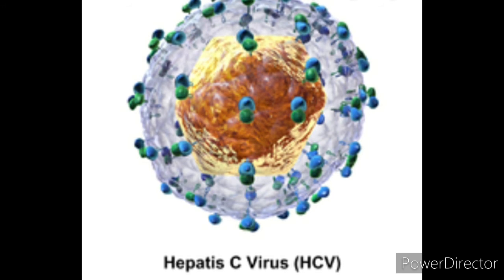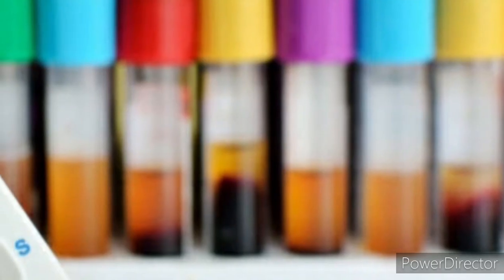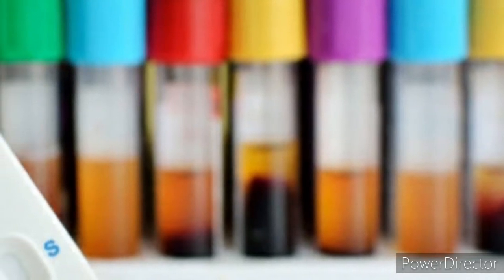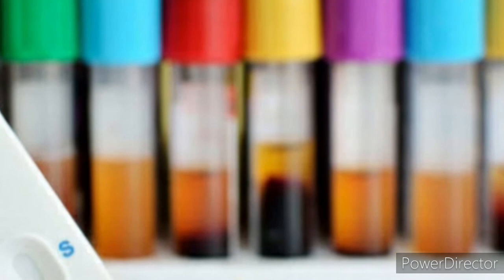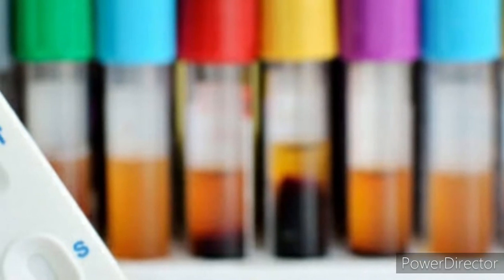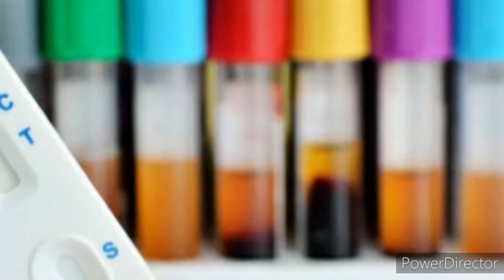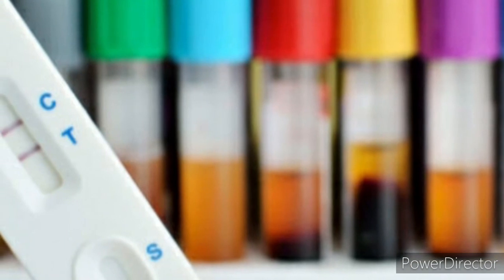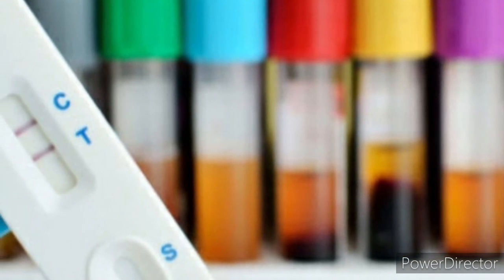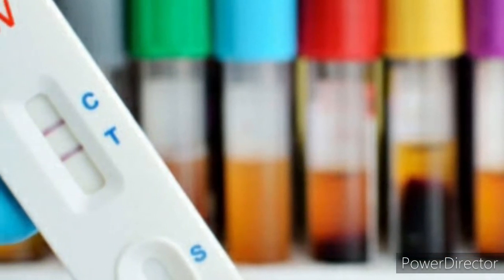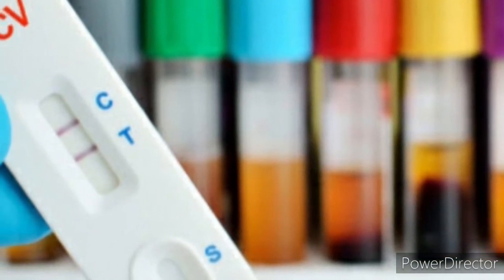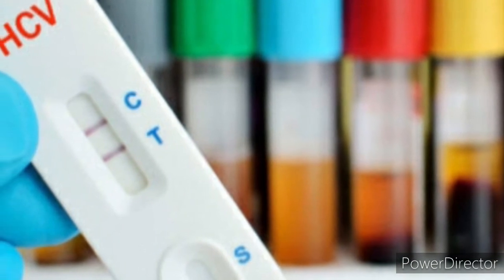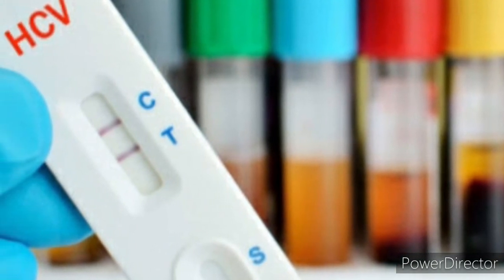To perform the test, add 25 microliters of serum or plasma into the sample well using a micropipette. Then add one drop of buffer into the sample well and allow it to react for 5 to 20 minutes after adding the sample and buffer.